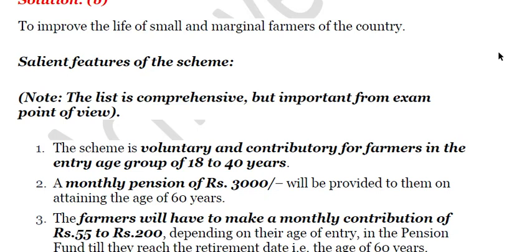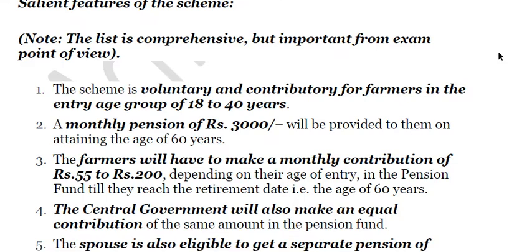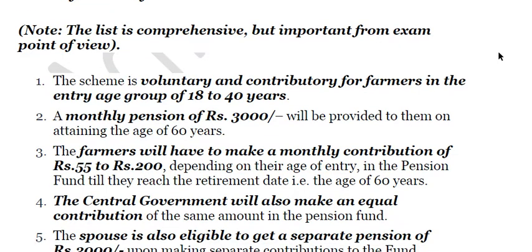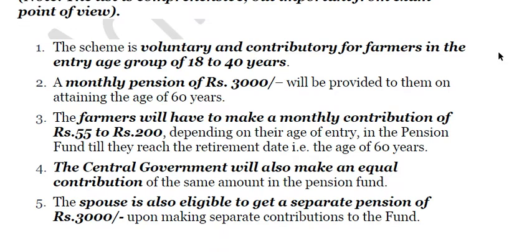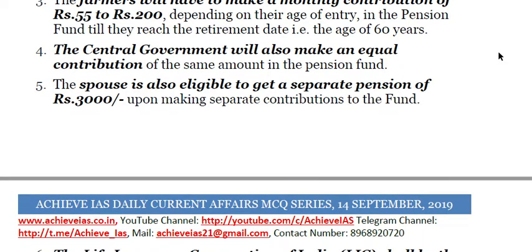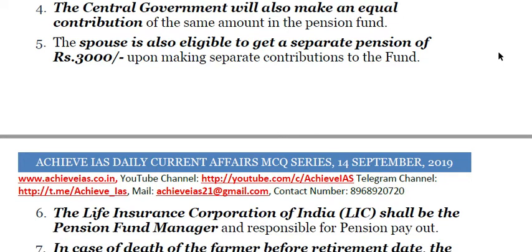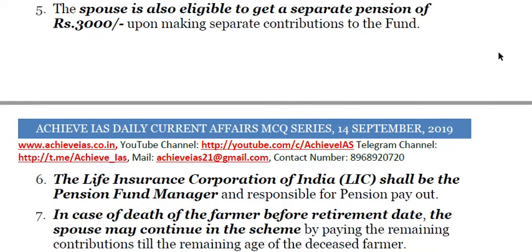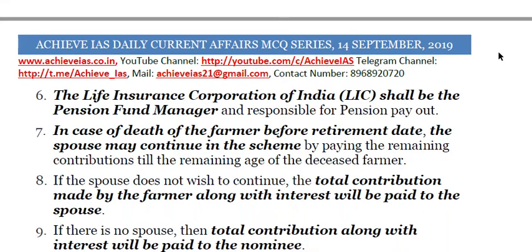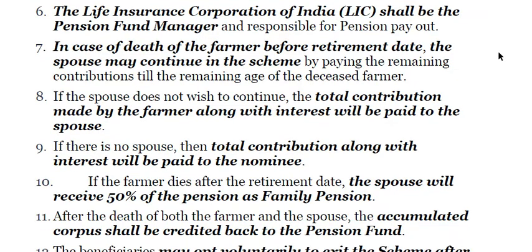Salient features of the scheme: it is a voluntary contribution for farmers in the entry age group of 18 to 40 years. A monthly pension of Rs. 3,000 will be provided. Farmers will have to make a monthly contribution ranging from Rs. 55 to Rs. 200. The central government will also make an equal contribution. The spouse is also eligible to get a separate pension of Rs. 3,000 upon making separate contributions to the fund. The Life Insurance Corporation of India shall be the pension fund manager. In case of death of the farmer before retirement age, the spouse may continue in the scheme.